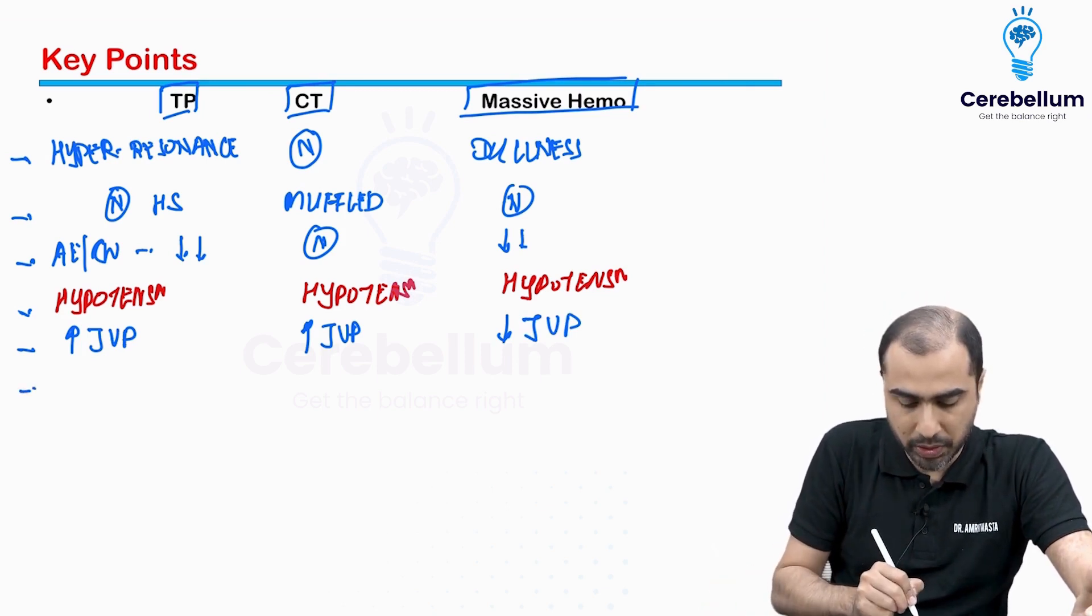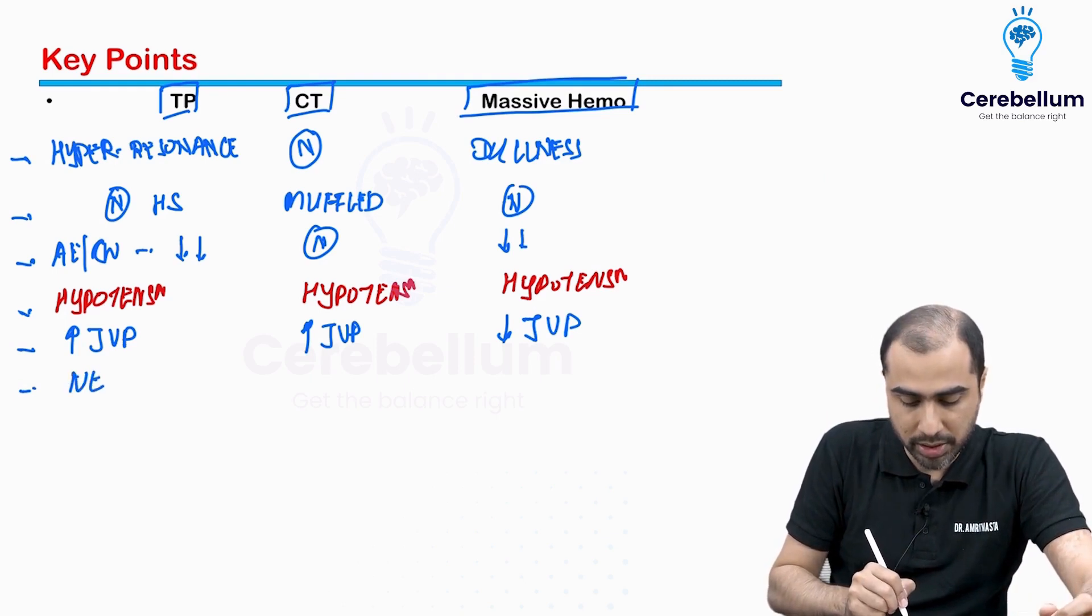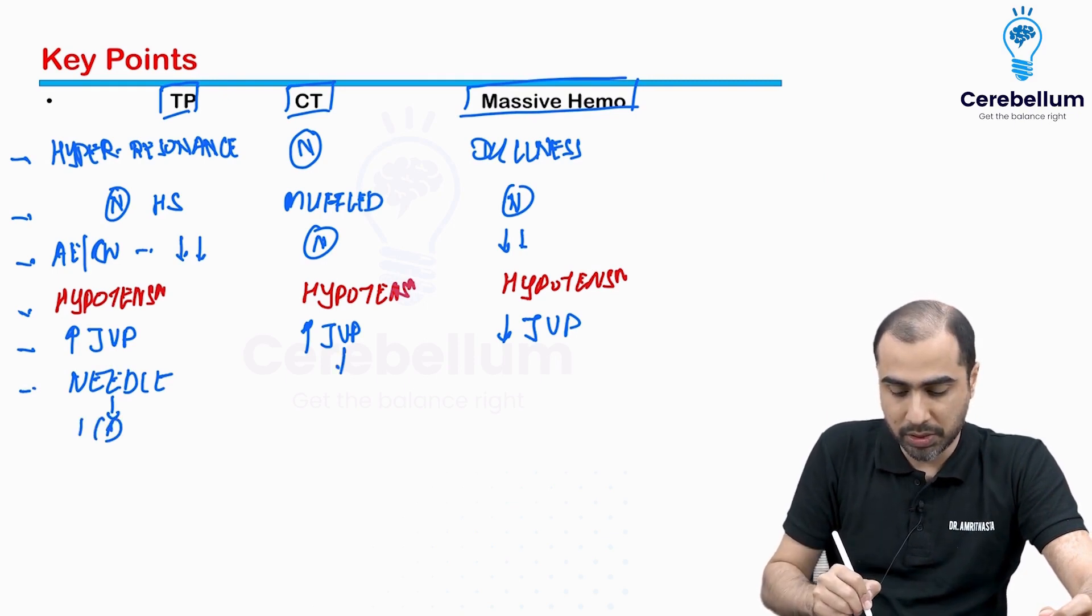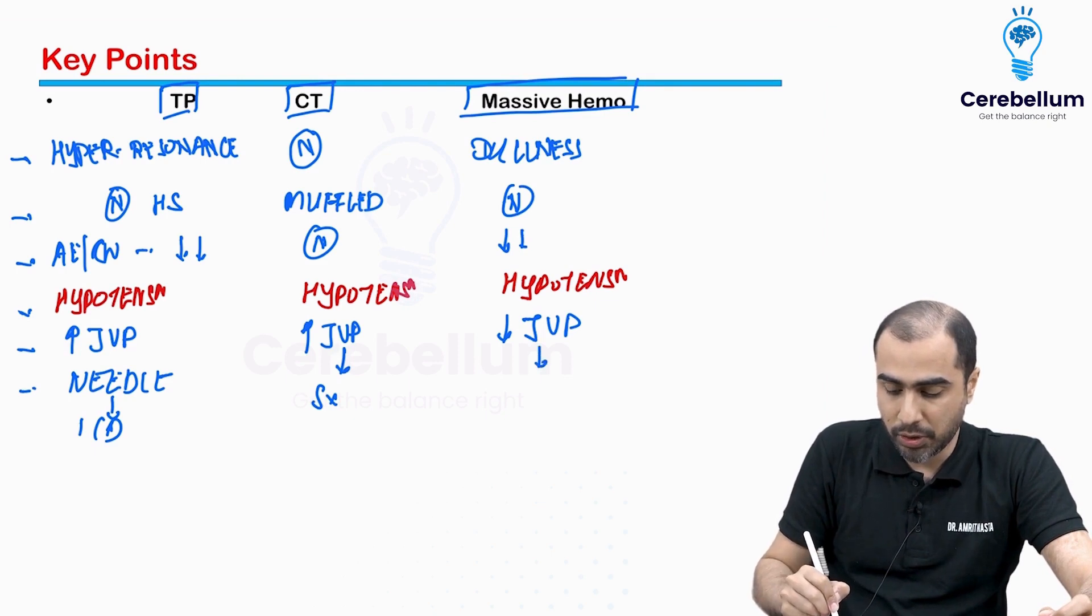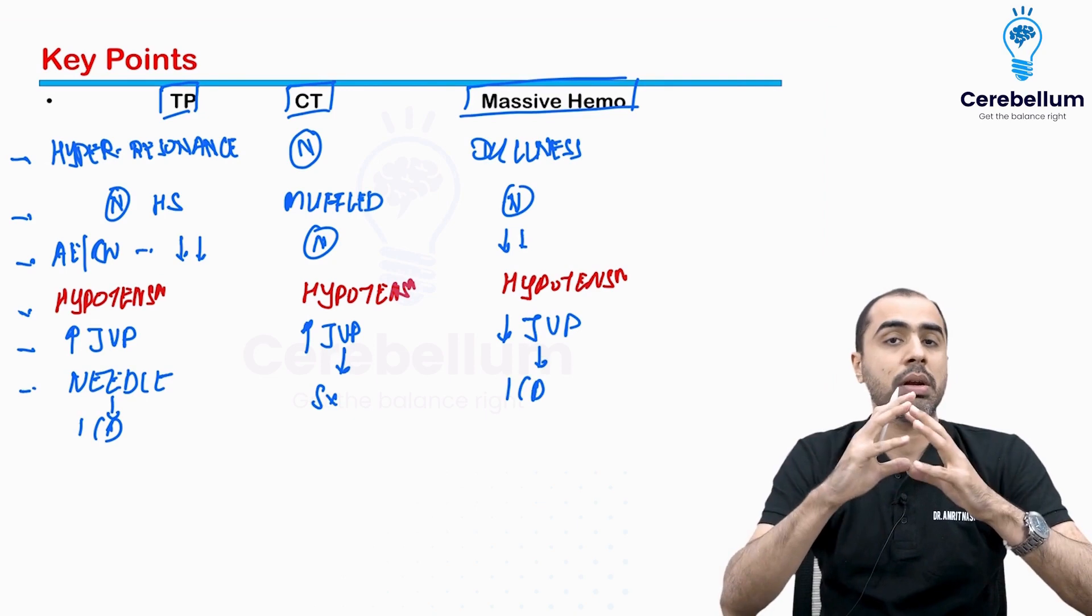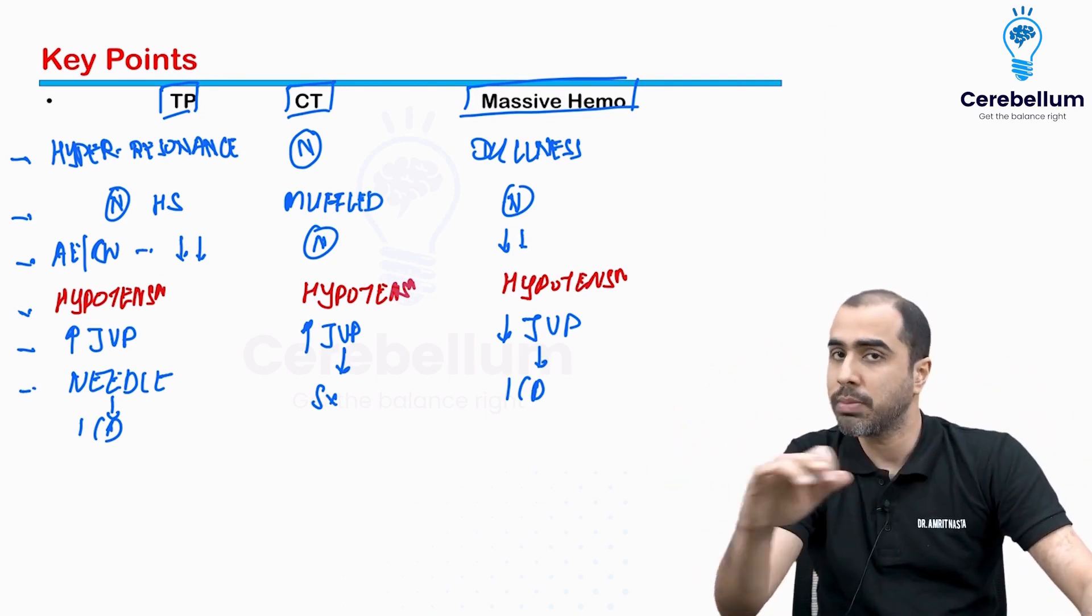Treatment wise they are entirely different, that's why we need to know. Here no need to do x-ray, straight away do needle decompression in triangle of safety, put the needle and then later put intercostal drain. Here the treatment is going to be surgery, explore. And here the treatment is going to be straight away put intercostal drain.